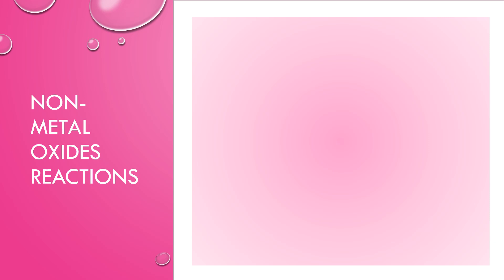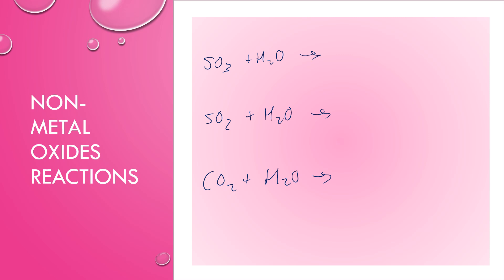You should also know how non-metal oxides react with water. For example: SO₃ forms H₂SO₄ (sulfuric acid, a strong acid); SO₂ forms H₂SO₃ (sulfurous acid, a weak acid); and CO₂ reacts to form carbonic acid H₂CO₃, which is also a weak acid. These are non-metal oxides, so they form acidic solutions. Make sure you know the difference between how metal oxides and non-metal oxides react with water.